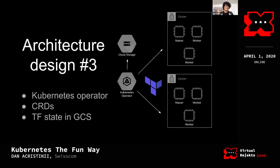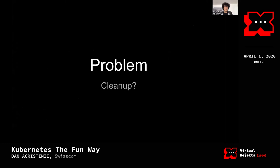Back to the drawing board again — architecture three. Build a Kubernetes operator sitting in a separate cluster, use Google Cloud Storage for the Terraform backend because it has locking support, and spin up containers from that operator. But I really didn't know how to handle cleanup. Do we create two separate jobs? Does hitting the endpoint create another resource? Or do we start a pod and use a pre-stop hook to run Terraform destroy? It was getting really complicated.